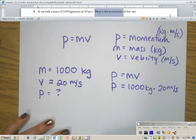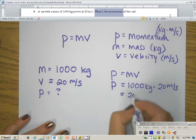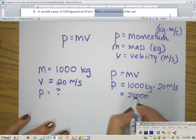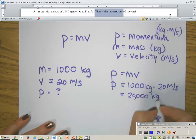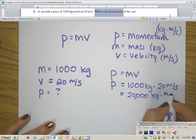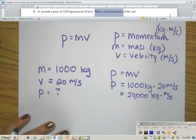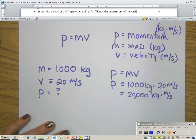Once I write all of that down, I can solve. That'll be 20,000, and the unit, nothing cancels, so it's just 20,000 kilograms times meter per second. It's that simple to solve for momentum.